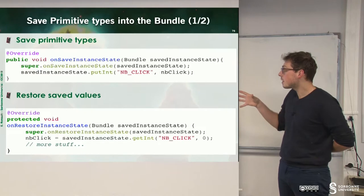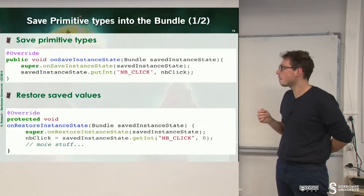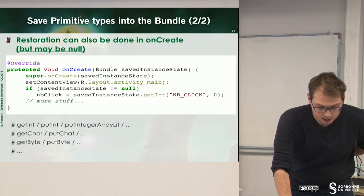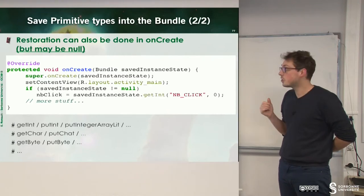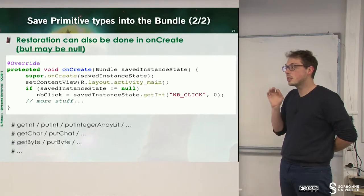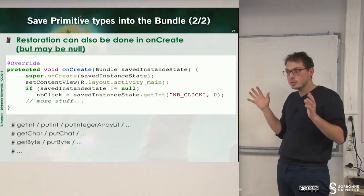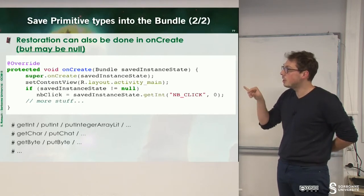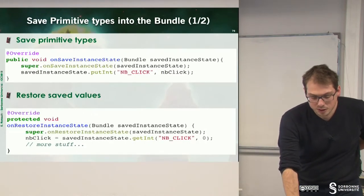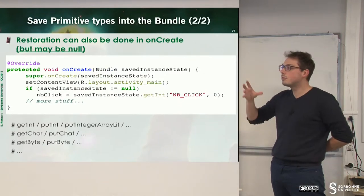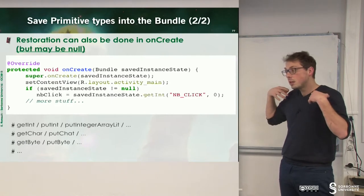The bundle can also provide a default value if the value was not previously saved. You can also load the value from the onCreate method, but in this case you have to ensure that your bundle is not null. Your bundle will be not null only during a rotation; otherwise the bundle is null. So you have to check whether the bundle is null before grabbing the value. You may prefer to use onRestoreInstanceState, but sometimes you have only a few values to grab and you can do it in the onCreate method. In this bundle you can put all primitives: integer, strings, char, byte, and so on.